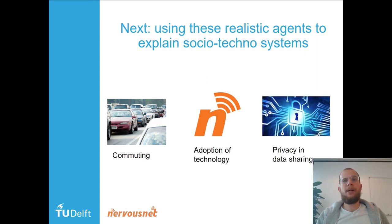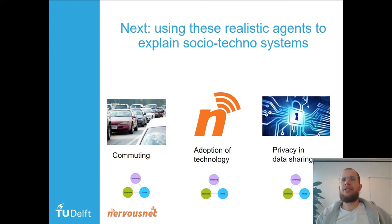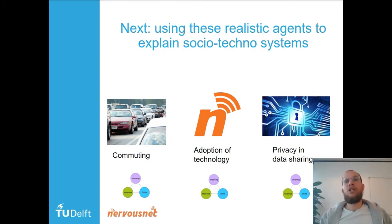Or maybe how people think about privacy and data sharing — the practice of data sharing and the meaning of privacy attached to that. Notice that all these things are related to certain practices: the practice of commuting, the practice of adopting technology, the practice of data sharing. We believe we have a lot of potential for using these social practice agents to explain social technical systems.